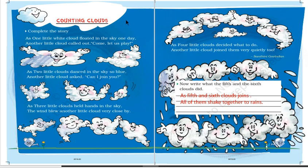Now let's come to the next part, Counting Clouds. Oh it's very interesting. Complete the story. One little white cloud floated in the sky one day. Another little cloud called out, come let's play. Two little clouds danced in the sky so blue, another little cloud asked, can I join you? Three little clouds held hands in the sky, the wind blew another little cloud very close by. Four little clouds decided what to do, another little cloud joined them very quietly too.